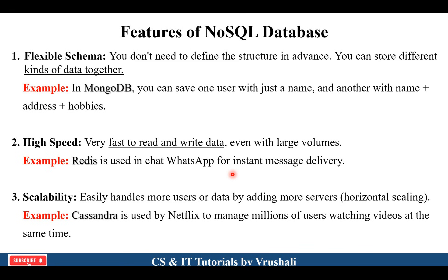Now let's understand different features of NoSQL database. One of the most important features is flexible schema, meaning you can store different formats of data together. You can store PDF, Word, JPG, MP3 — all types of information in one set. MongoDB is a database that supports these different types of data, so flexible schema is one of the most important features.